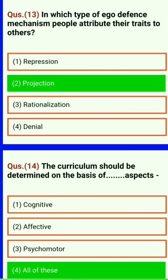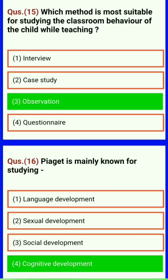The curriculum should be determined on the basis of cognitive, affective, and psychomotor aspects — all of these. Projection. Which method is most suitable for studying the classroom behavior of the child while teaching? Observation.